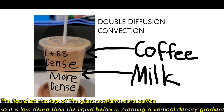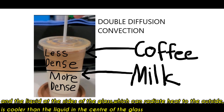The liquid at the top of the glass contains more coffee, so it is less dense than the liquid below it, creating a vertical density gradient. And the liquid at the sides of the glass, which can radiate heat to the outside, is cooler than the liquid in the center of the glass.